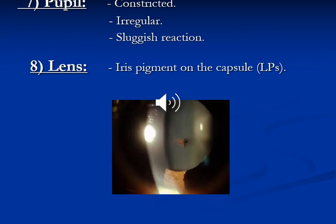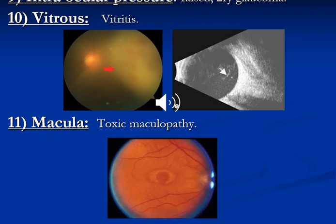The pupil will become constricted with sluggish reaction to light. Number eight is formation of cataract, or there will be iris pigments on the anterior capsule of the lens. Other signs include increased intraocular pressure, vitreitis, and toxic maculopathy.